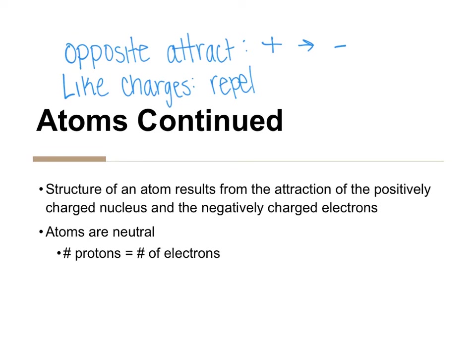Now that we've refreshed the concept that opposites attract and like charges repel, we can talk about the structure of the atom. The structure of the atom results from the attraction between the positively charged nucleus and the negatively charged electrons. The proton is positive and in the nucleus; the neutron is also in the nucleus but has no charge, so the overall charge of the nucleus is positive. That positive nucleus is the force that holds the electrons nearby, holding the atom together.